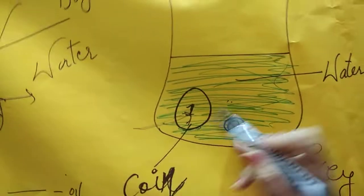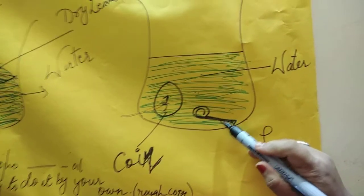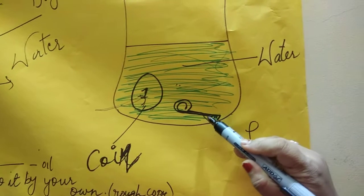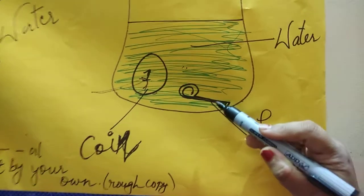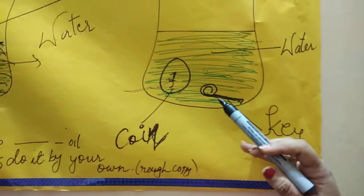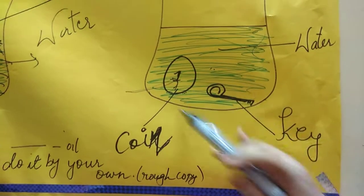Sink means doob jata hai. Then I took a metal key, chabi liya which has been made up of metal. Now again after observing, what I observe over here is that the key has settled, that is it came at the bottom.